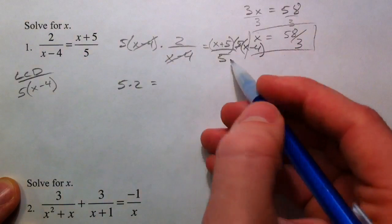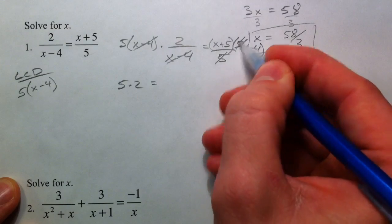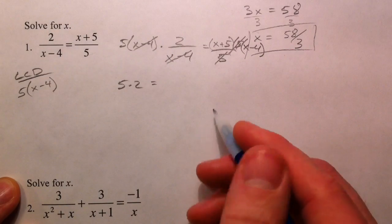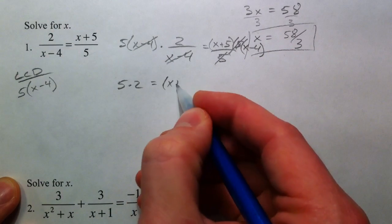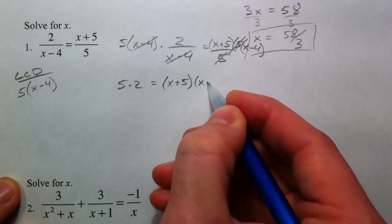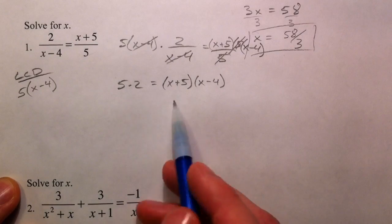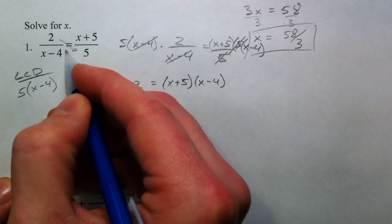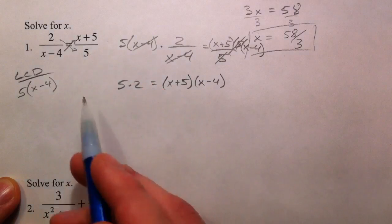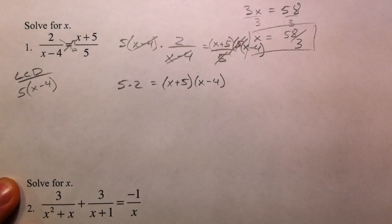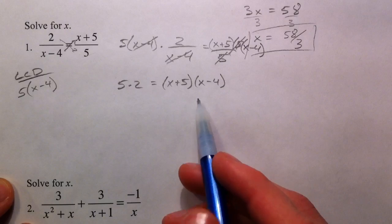The 5s cancel out, that was the whole reason we did it, and so now you're left with x plus 5 times x minus 4. Notice this right here is the result that you would get if you just cross-multiplied. I don't like just saying let's cross-multiply because people get cross-multiplying and multiplying fractions confused. This is the whole reason cross-multiplying works: multiply both sides by the lowest common denominator and the denominators cancel out.